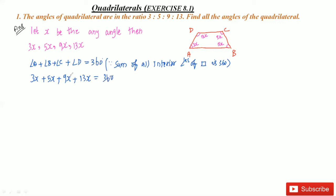Just add all the angles: 13 plus 9 is 22, and 5 is 27, and 3 is 30. So I'm getting 30x equals 360 degrees. Now we need to cancel: one zero, one zero will be cancelled, and this is 12 times. So I'm getting x equals 12. This is our required value of x.